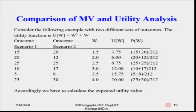Consider a further example with two different sets of outcomes. The utility function is again quadratic: U(W) = W² + W. The outcomes for scenario one are 15, 20, 25, 10, 5, and 25. The outcomes for scenario two are 20, 12, 25, 17, 8, and 30. The corresponding W (wealth) values and U(W) values based on the quadratic utility function, along with probabilities, are given in the table.